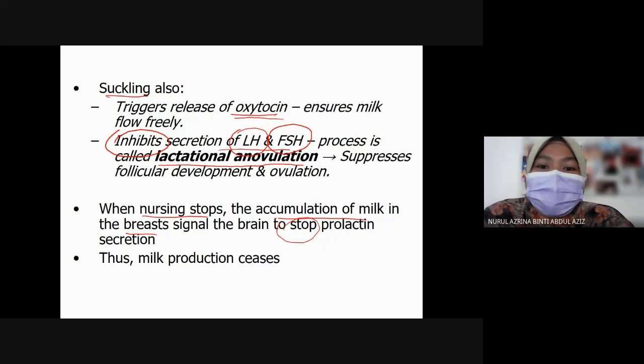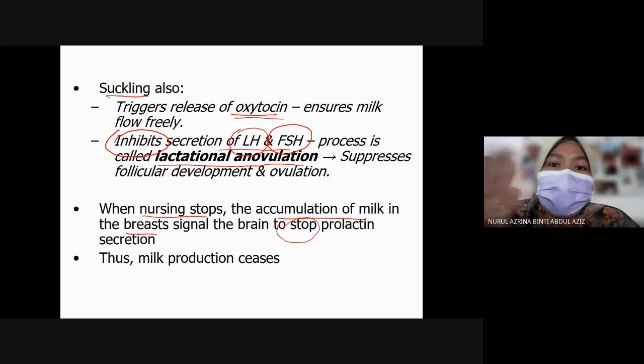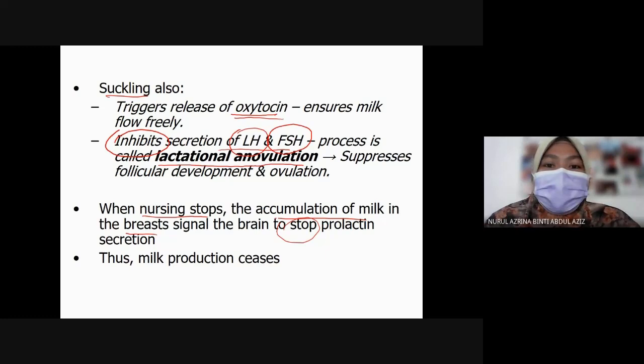In lactation, two hormones are very important: oxytocin and prolactin. These two hormones work oppositely with estrogen and progesterone. Feeding the baby also has another function besides triggering the release of oxytocin — it will also inhibit secretion of LH and FSH.